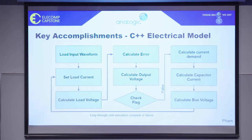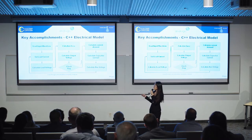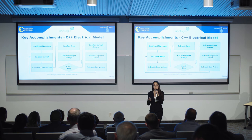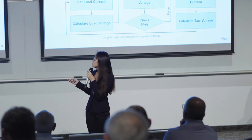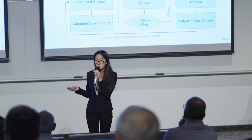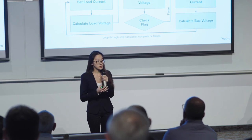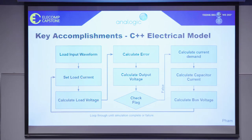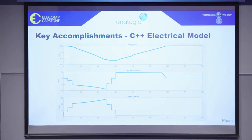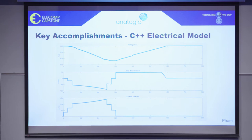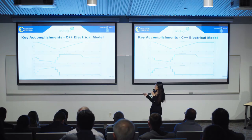The C++ program accepts variable user input, performs a set of operations, and checks whether any thresholds are surpassed. If failure is predicted, it will notify users; if not, it will continue to loop through until the simulation is complete. The program also saves relevant values and plots them for analysis. Here is a sample output of the C++ electrical model in response to a very simple input waveform. On the top is the available voltage supply.